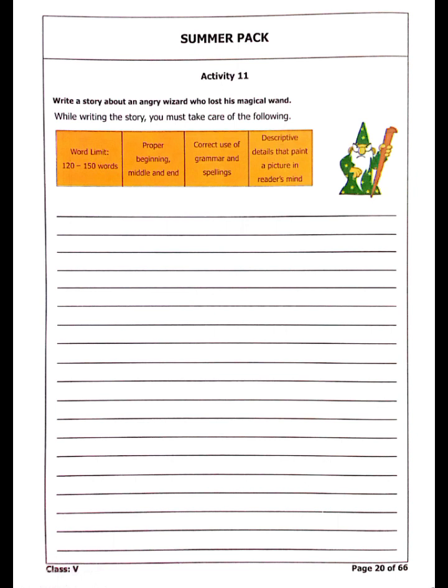Activity 11 is write a story about an angry wizard who lost his magical wand. A wizard is a magician, and a magical wand is a long thin rod which magicians or fairies wave when showing magic. You have to write a creative story carefully with 120 to 150 words, proper beginning, middle and end, correct use of grammar and spellings, and descriptive detail that paints a picture in the reader's mind.